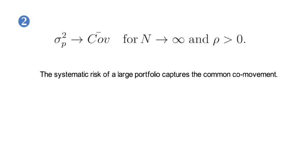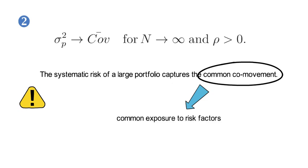I want to highlight for future reference that the reason for the common co-movement is that different firms and investment opportunities have common exposure to a small set of economy-wide macroeconomic risk factors.